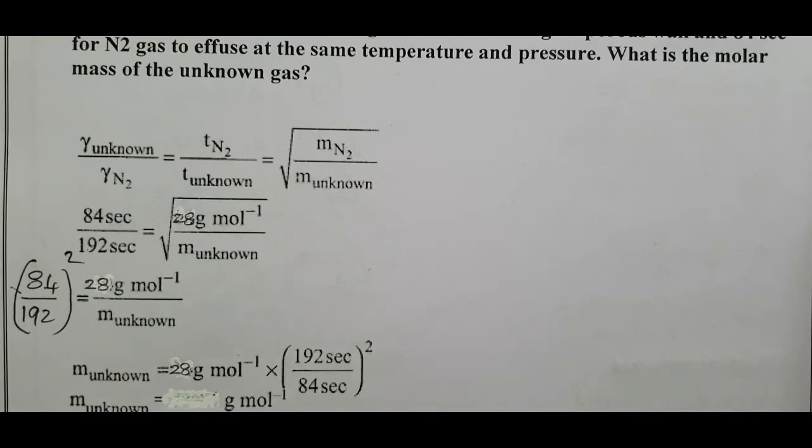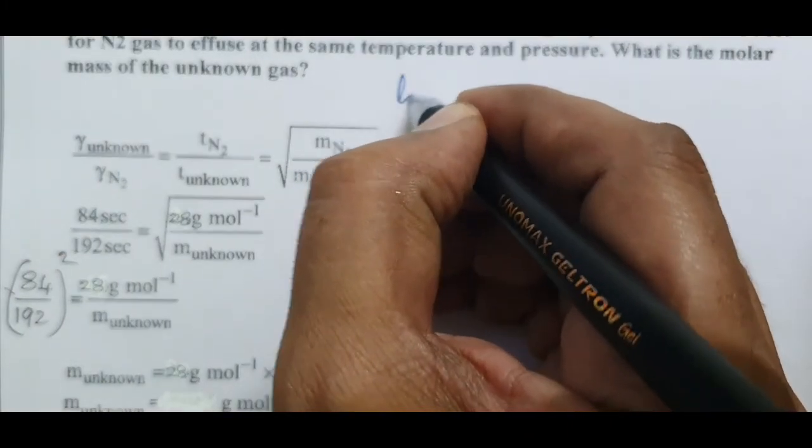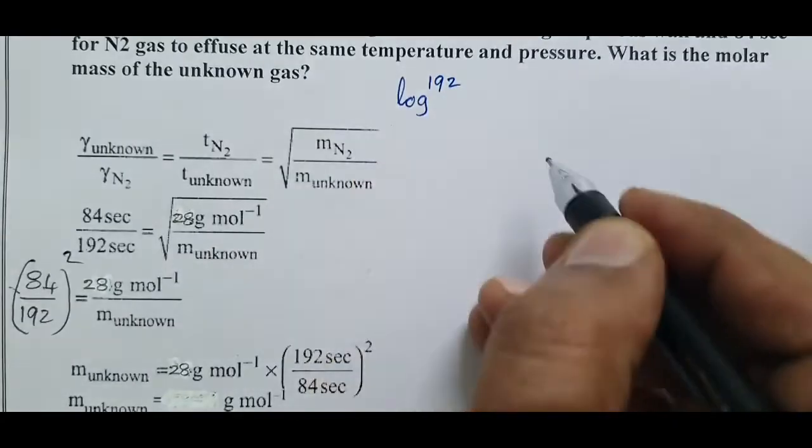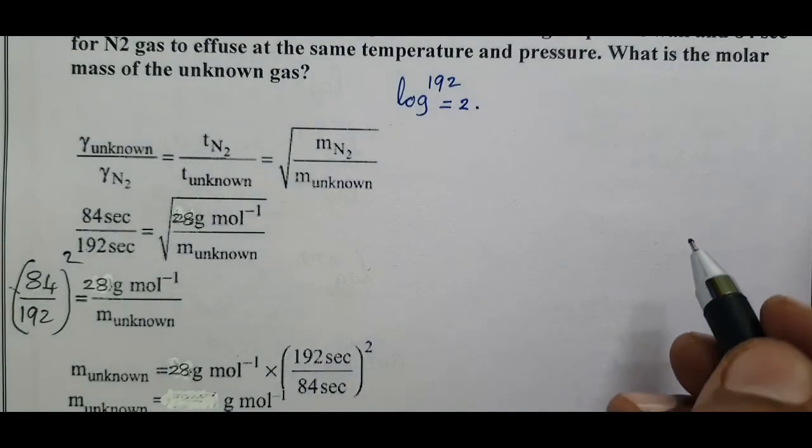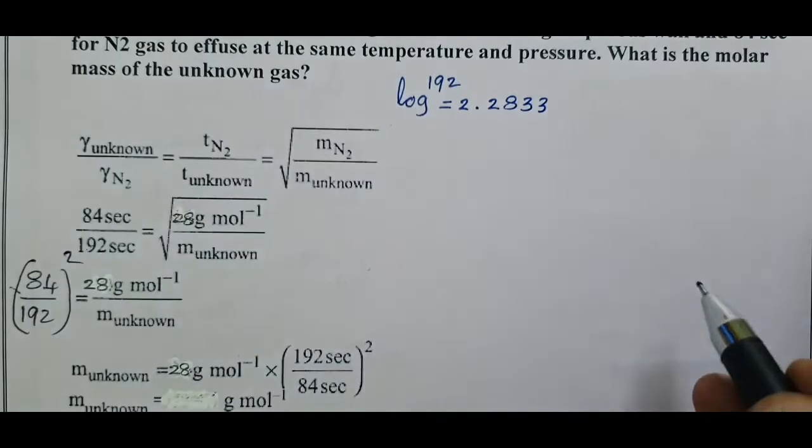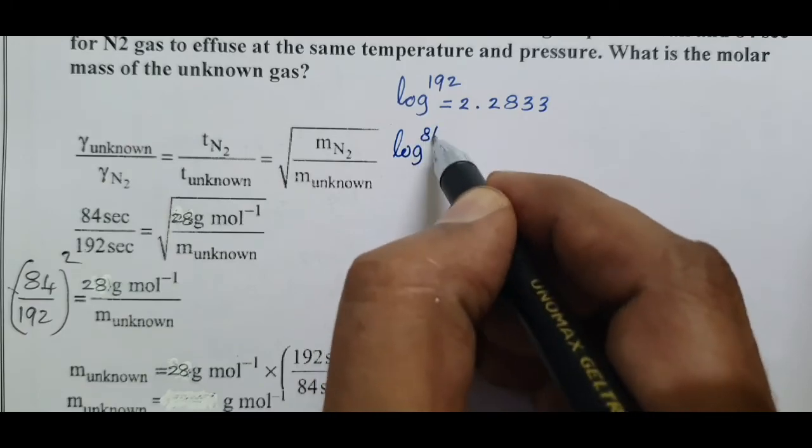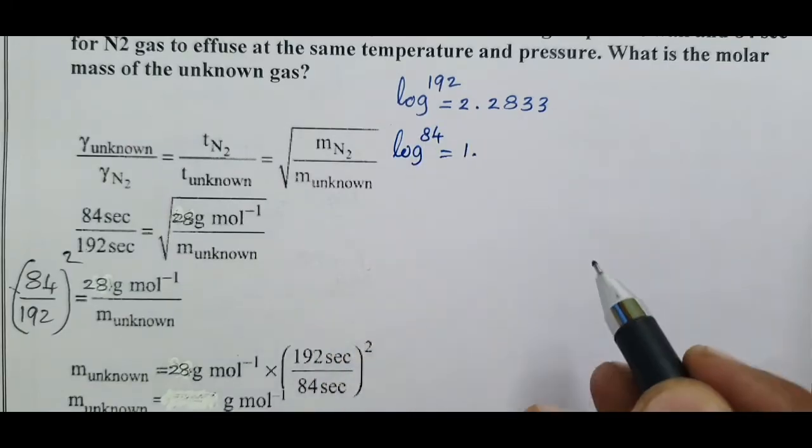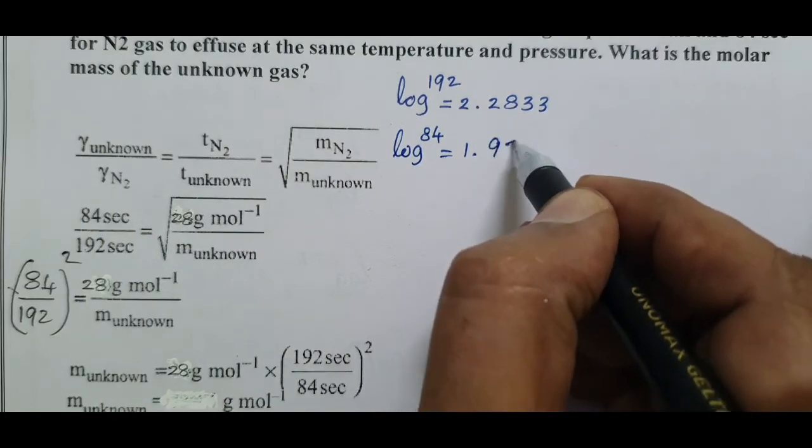Log of 192, log of 192 whole number 3 digits equals 2.833. And denominator 84, log of 84 equals whole number 2 digits equals 1.9243.